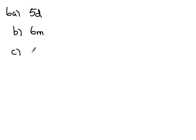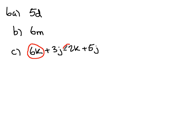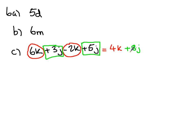6c requires a bit of work. I'm going to write the question out first of all, and then what we're looking for is term types. We've got a type of k, so I'm going to use a circle for that and include the k parts. It's crucially important that you include the sign in front of the k terms. I'll use a square for the j terms. So we've put the k's together: 6k take away 2k gives 4k, and then 3j add 5j gives positive 8j.